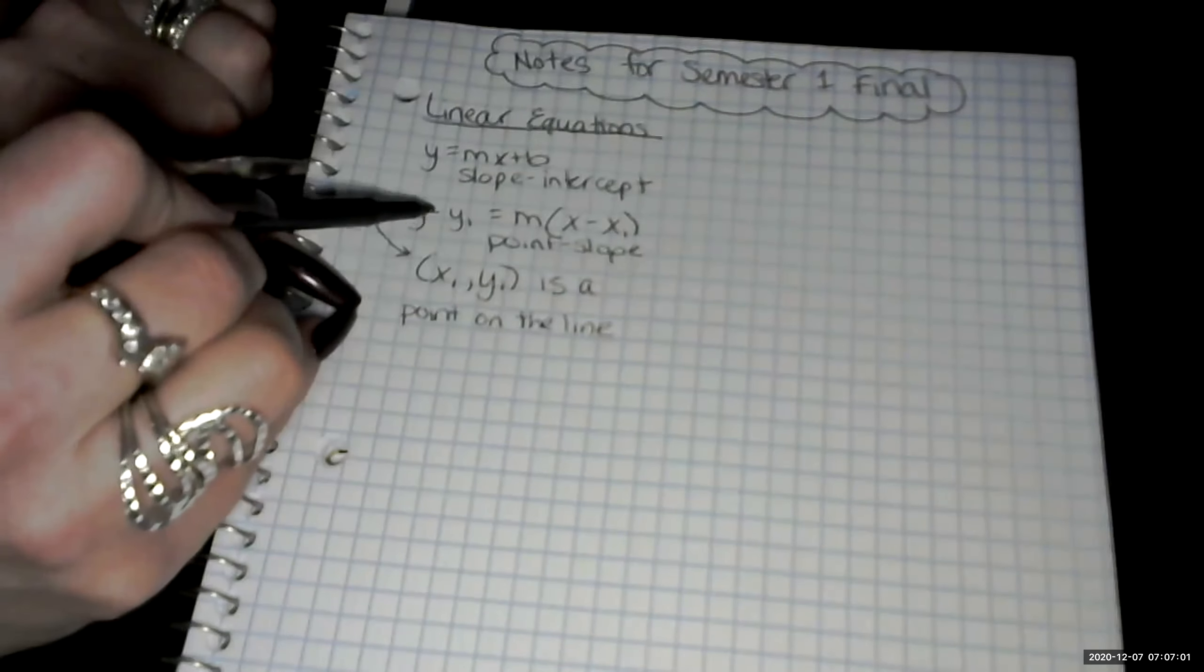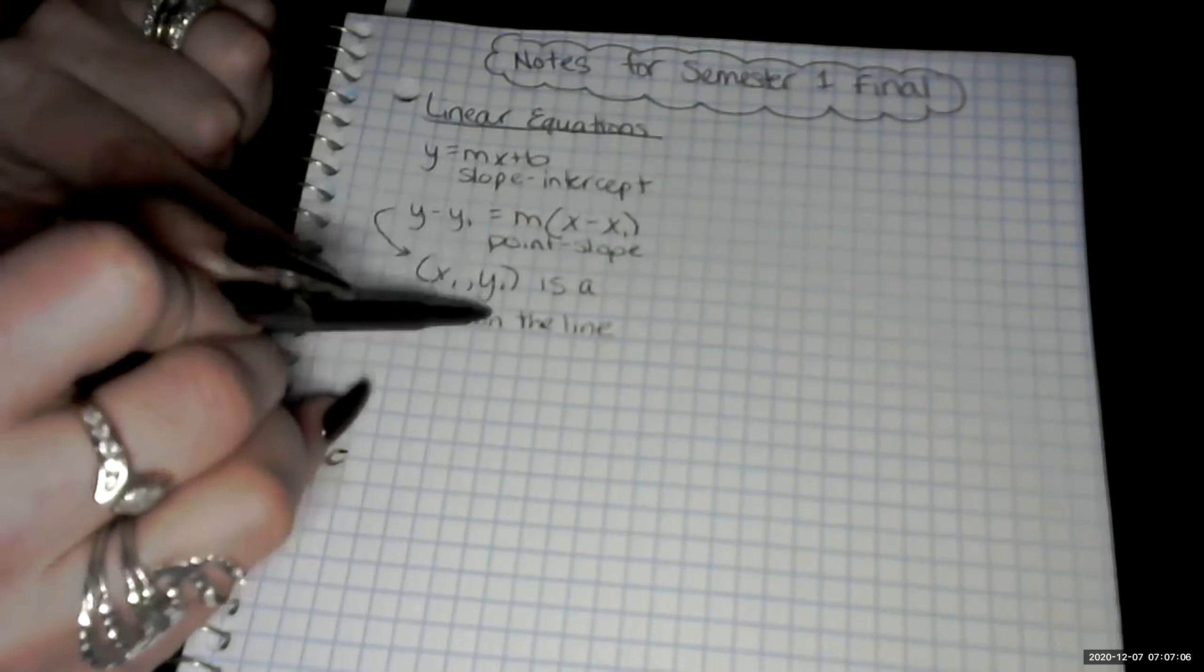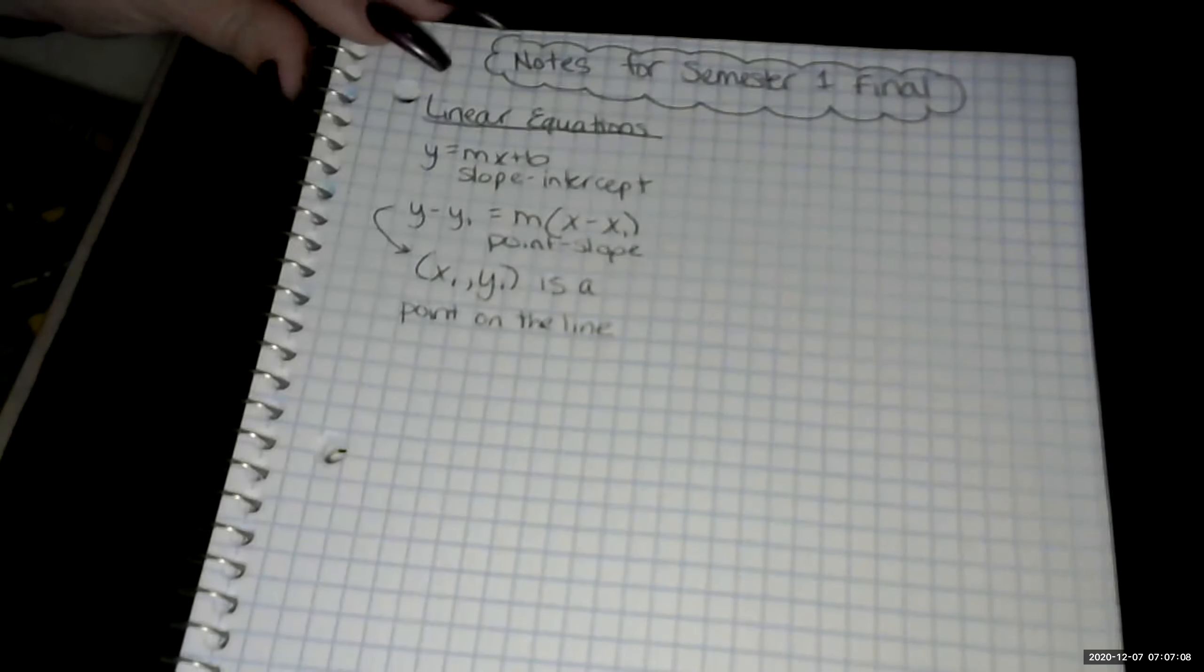So if this is a positive, that means the y value in the point is a negative. Two negatives cancel out to make a positive.